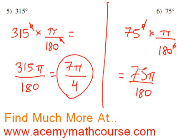At this point, we can actually divide top and bottom by 15. 75 divided by 15 is 5, the π is still there of course, and 180 divided by 15 is just 12. So that's it, 5π over 12.